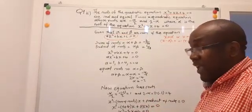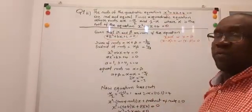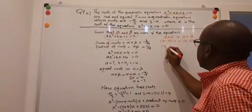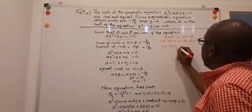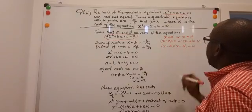That means (x - α) multiplied by (x - β) is equal to 0.